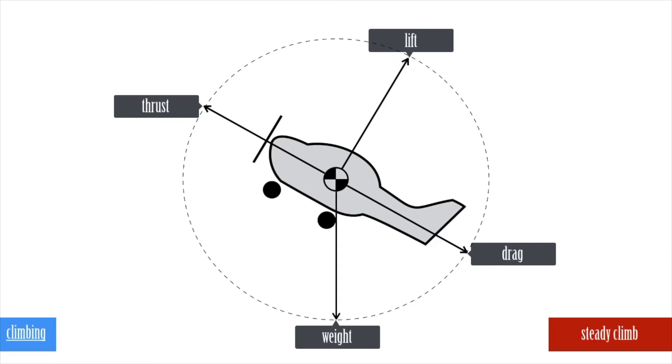The common misconception is that lift increases in a climb. In a steady climb, where the forces are in equilibrium, a component of weight points backwards. So weight may be resolved into two vectors: the weight component that opposes lift and the rear weight component.